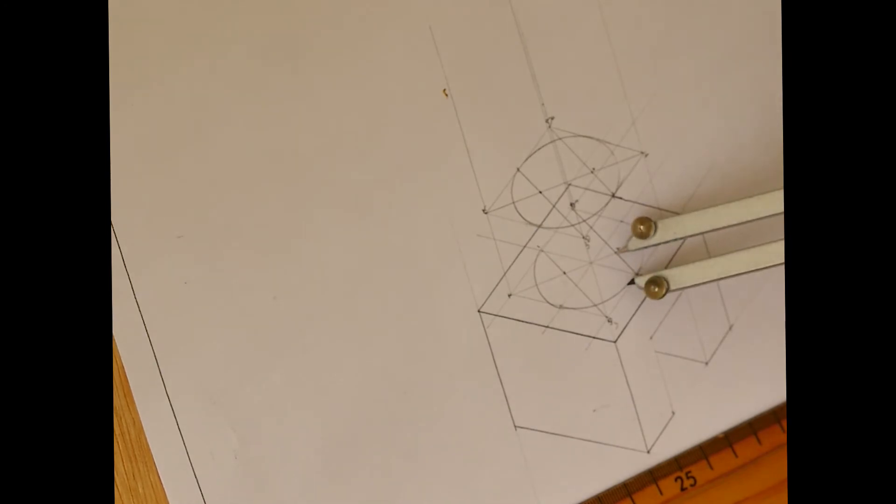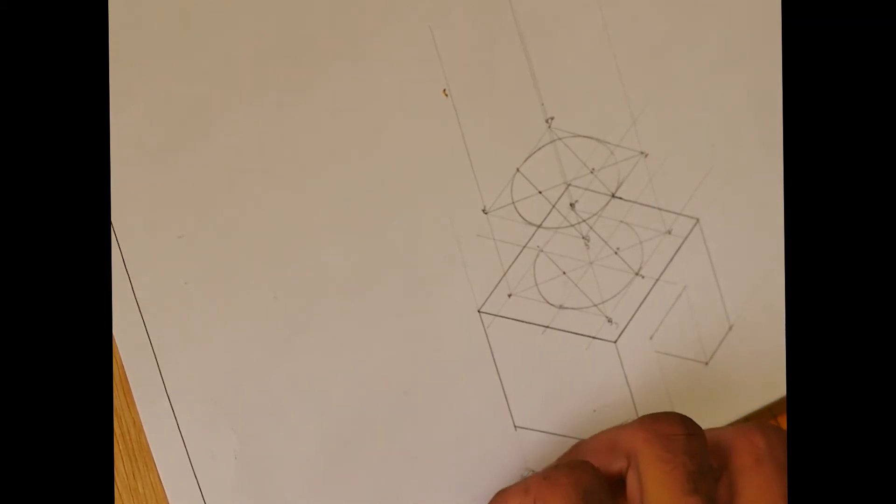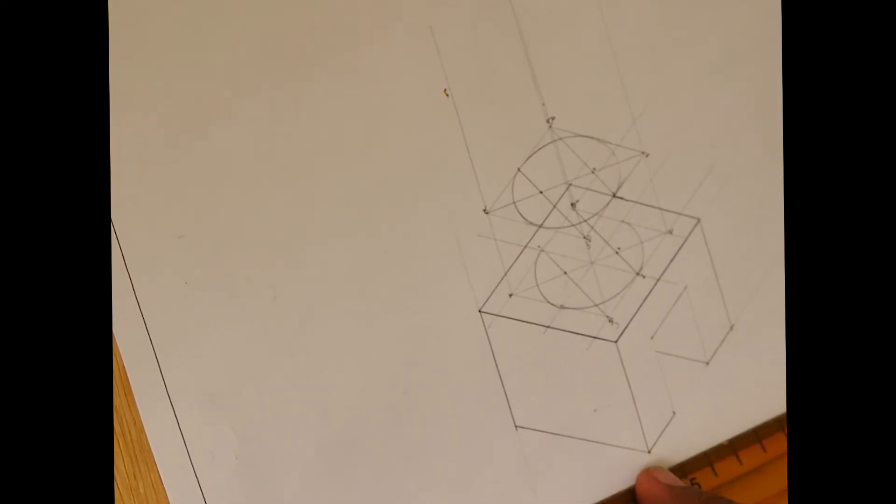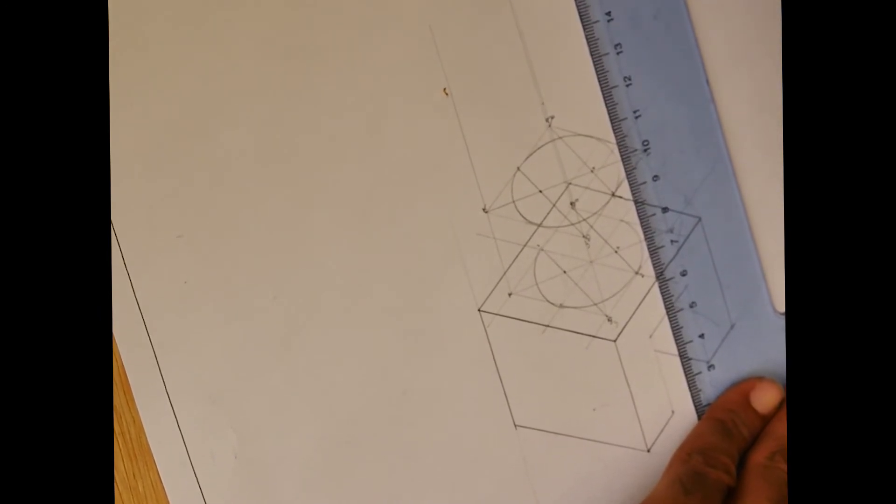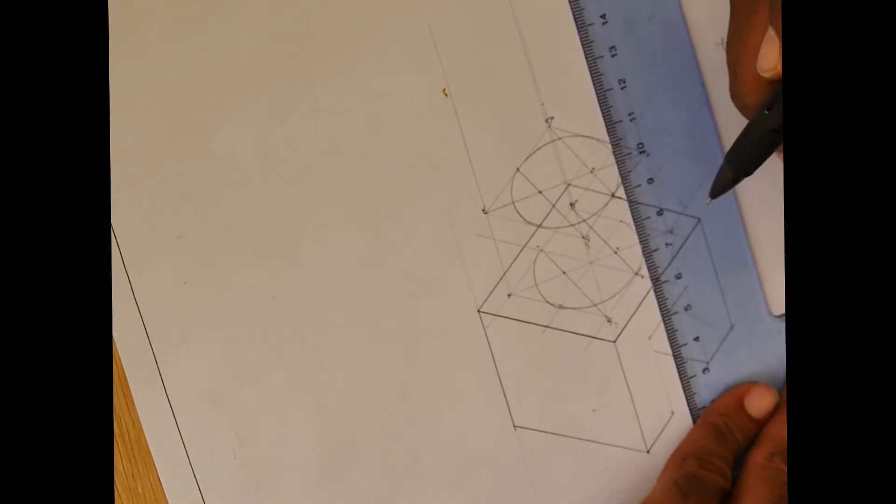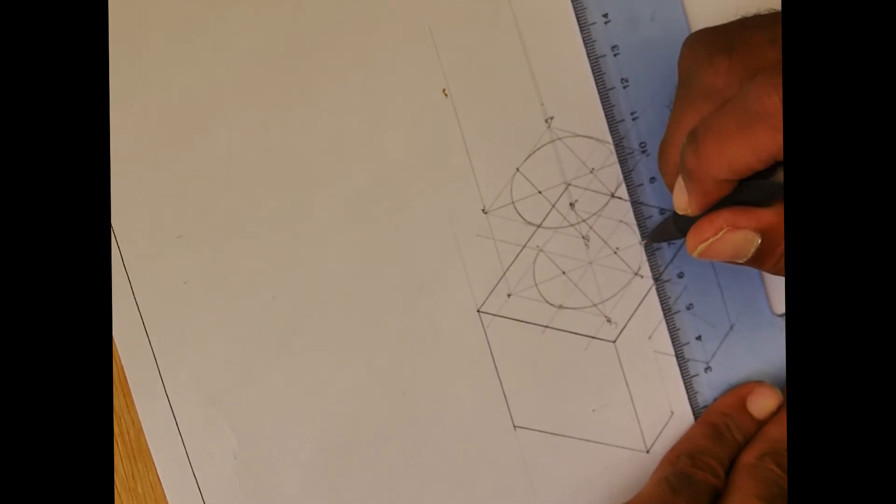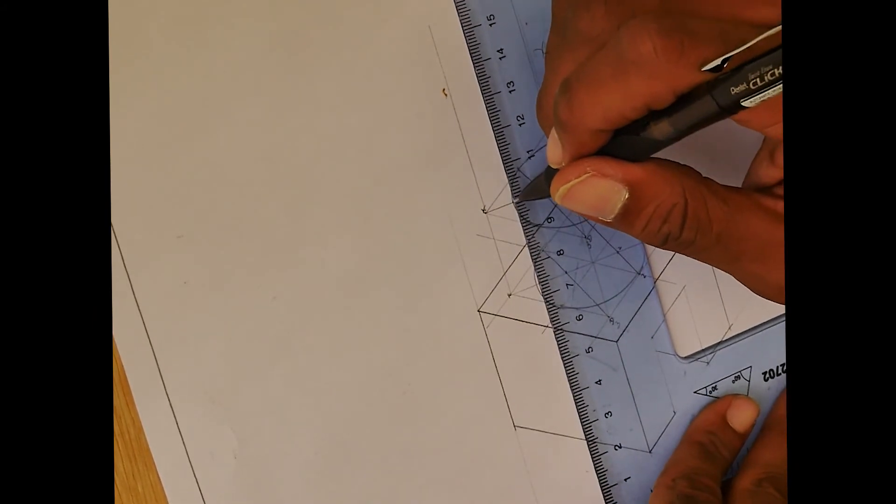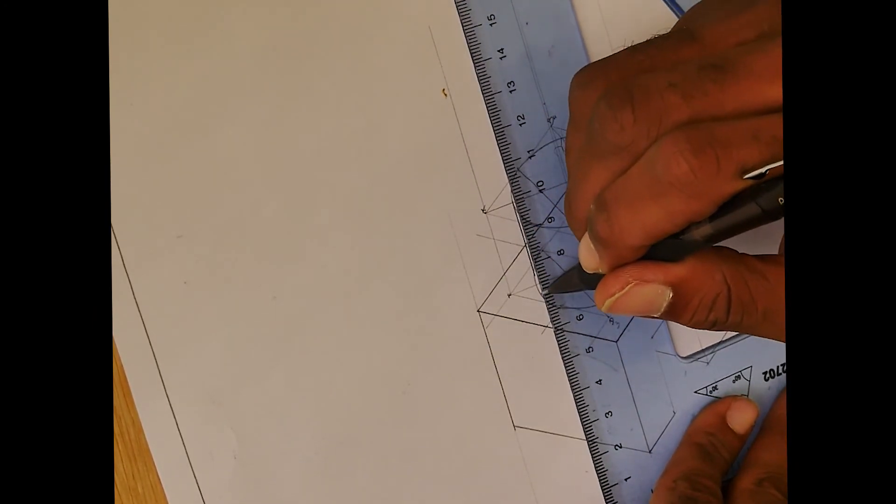Alright, so what am I doing? I'm now putting the last bit to complete this isometric circle. This isometric circle is now complete. And this isometric projection is also complete too.